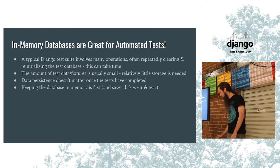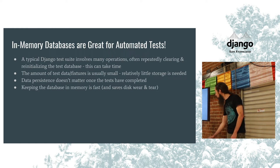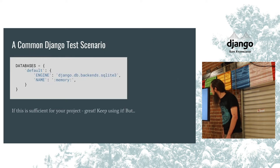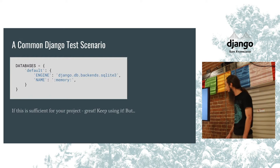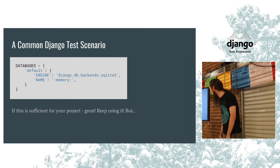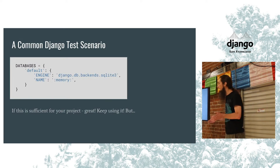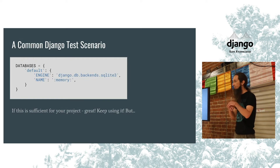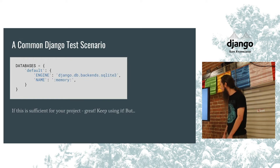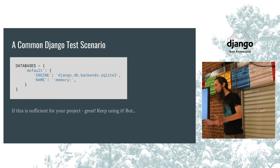It's fast and it saves wear and tear on the disk. So here is probably the first in-memory database Django test scenario you're seeing: use the SQLite backend, and then the name just `:memory:` with colons on either side, and that will create an in-memory database without any further configuration.